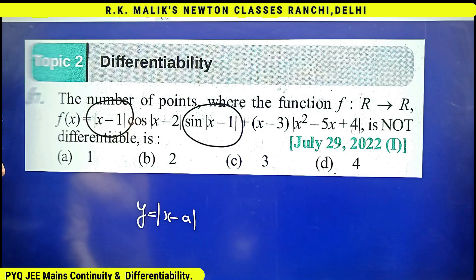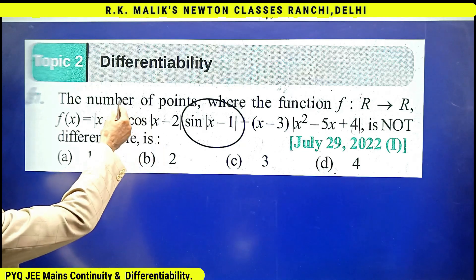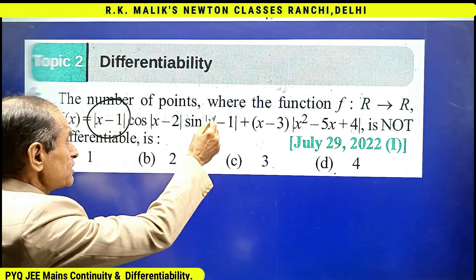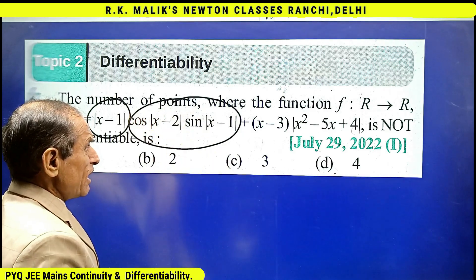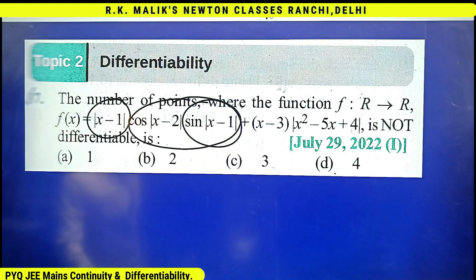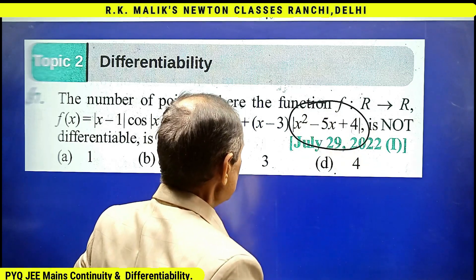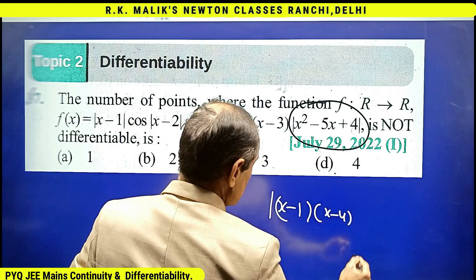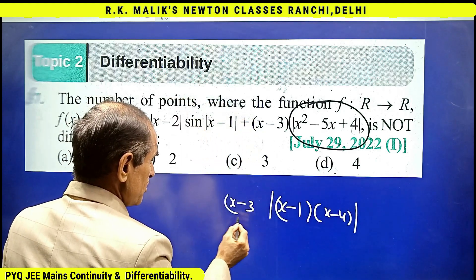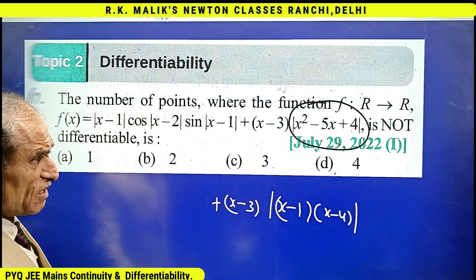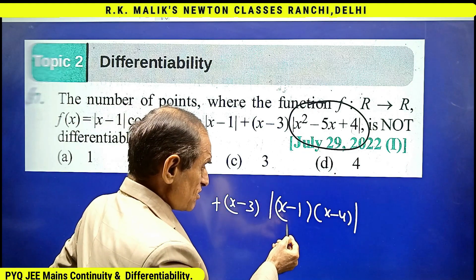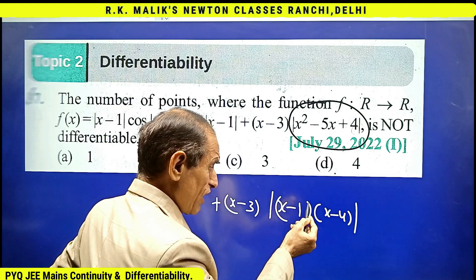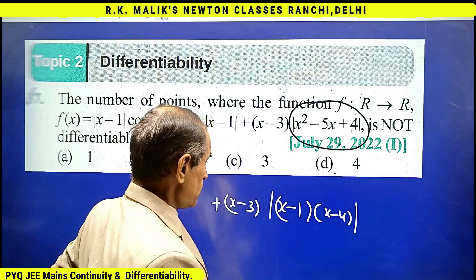Hence the whole function will be differentiable at x = 1. This part can be written as |x - 1| · (x - 4) · (x - 3). The first part is always differentiable. Since x = 1 is a root only once in this factor and x = 4 is also a root only once, the function will be non-differentiable at both x = 1 and x = 4.